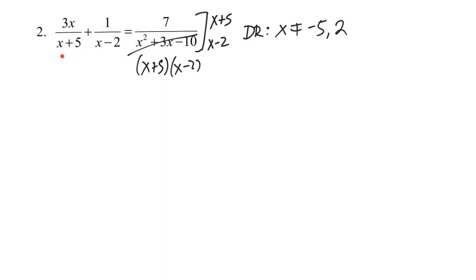So when I multiply this first fraction by x plus 5, by x plus 5 and x minus 2, x plus 5 and x plus 5 are going to cancel. What that's going to leave me with is 3x multiplied by the denominator that didn't cancel out. So this is going to say 3x times x minus 2.